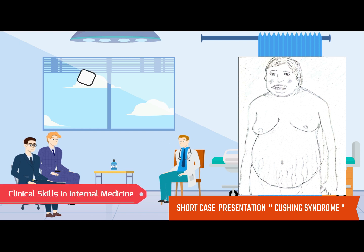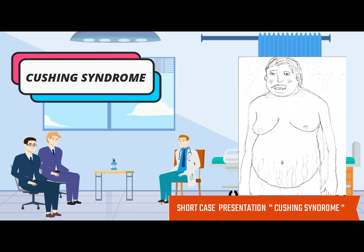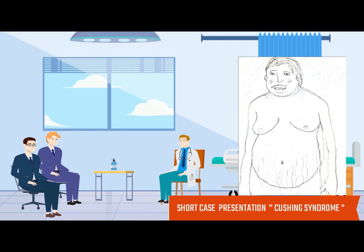The patient has truncal obesity with relatively lean and thin limbs. In addition, there are multiple purple-colored striae over the abdomen and other parts of the body. There is a bruise on the right forearm. The skin of the patient is thin and there is oral thrush.